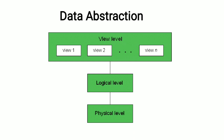That is, the employee salary and address and all such things are hidden. To summarize: physical level is the lowest level that describes how the actual data are stored. Logical level is the next higher level above the physical level, and it describes the relationships between data — the entire database in terms of a small number of relatively simple structures.